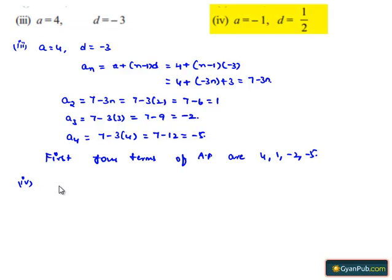Now, moving on to the fourth part, here a is given by -1 and d is given by 1/2.